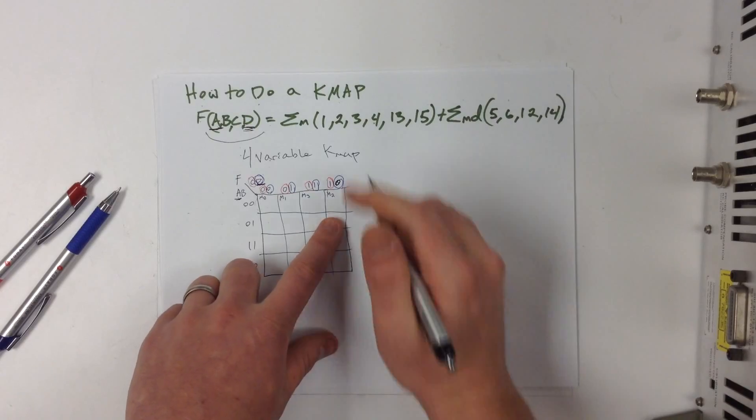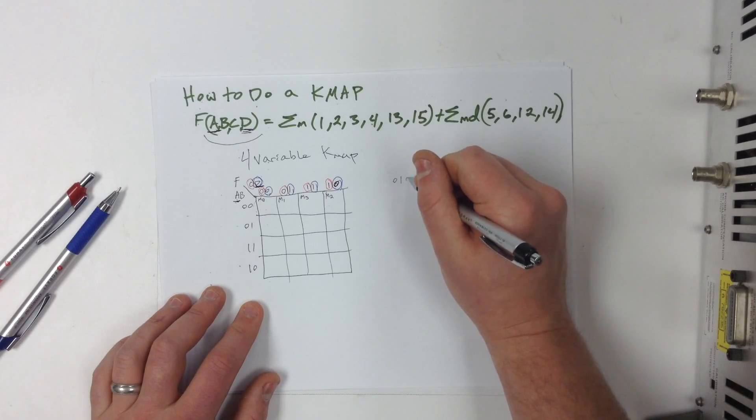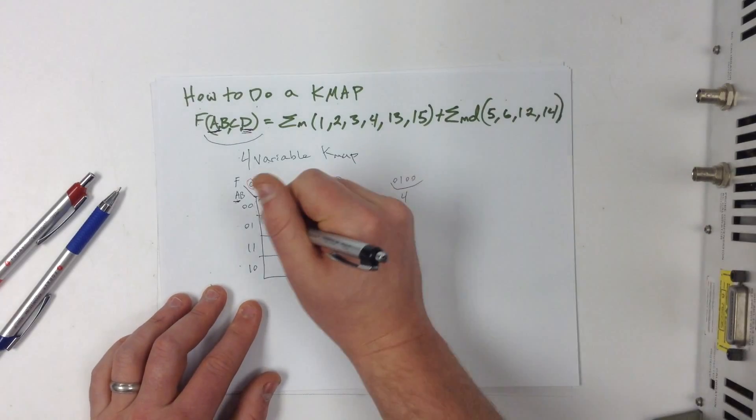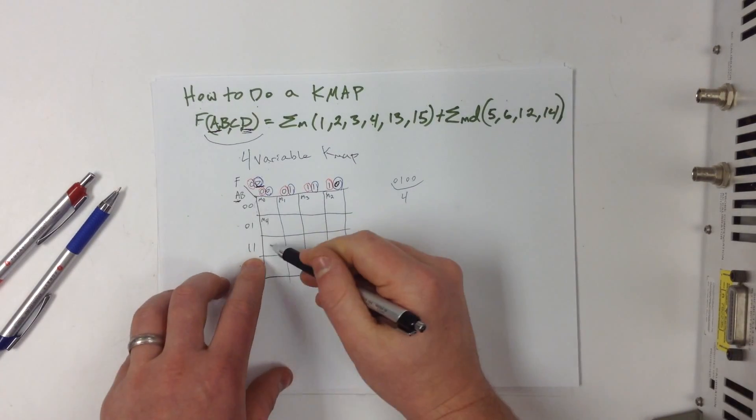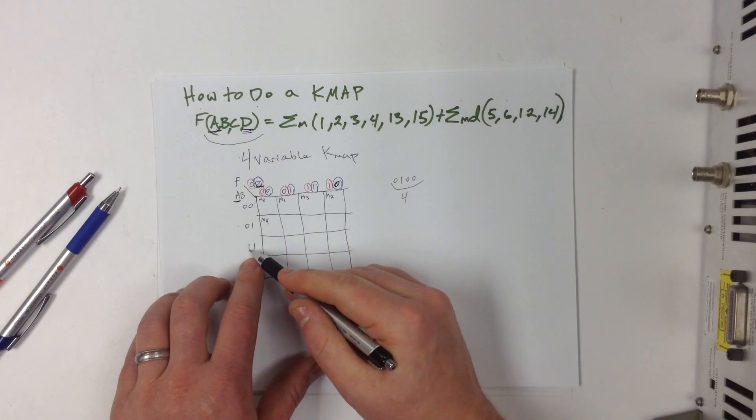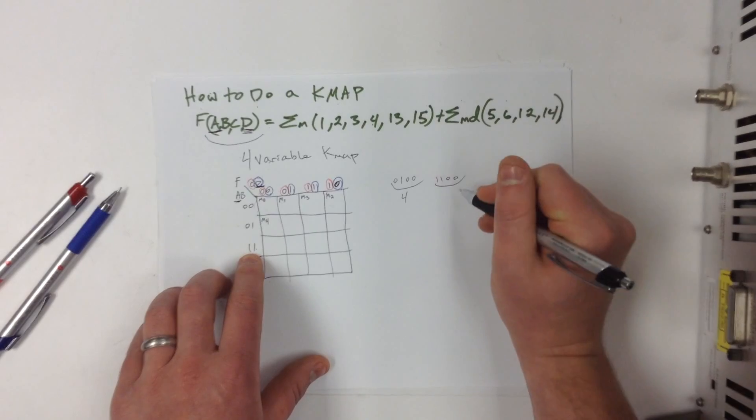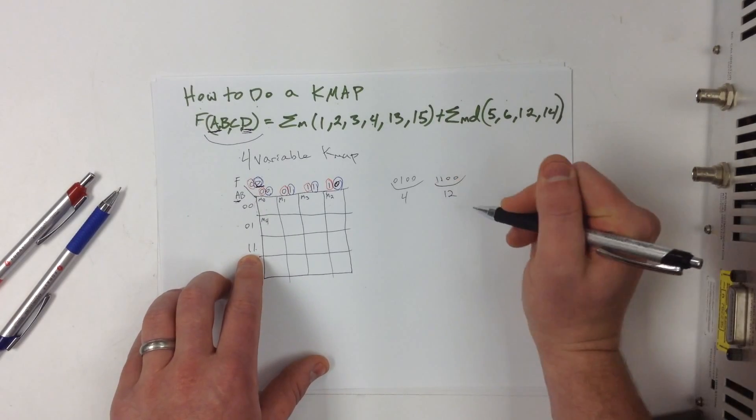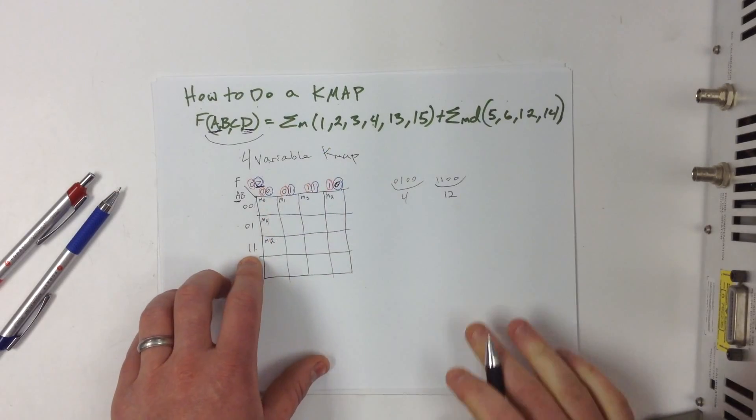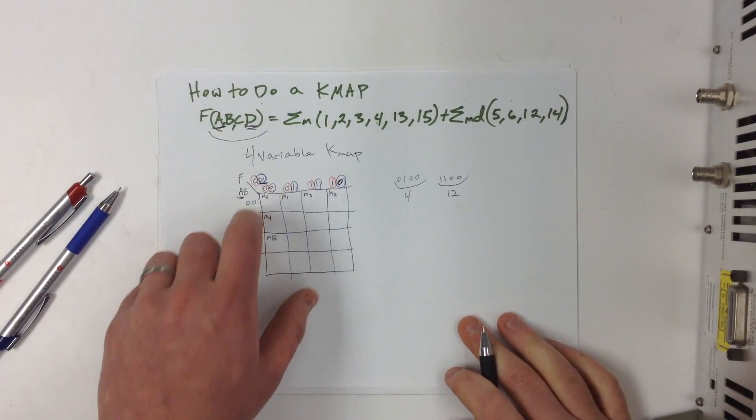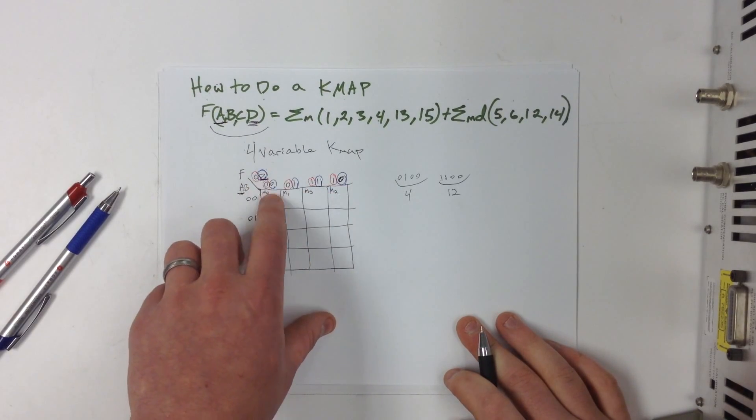So this column here, 0, 1, 0, 0. So the binary number 0, 1, 0, 0 is equal to 4. So this is minterm 4. Then right here, let's go ahead and do this one down here, just kind of jump around. This is 1, 1, 0, 0. So 1, 1, 0, 0 is equal to the binary number 8 plus 4 equals 12, right? So this one here would be minterm 12. Do you see why it's important to actually go through and figure out what each of your minterms are before you start assuming and going, you know, just counting through it.